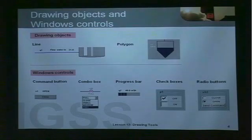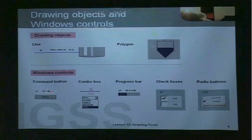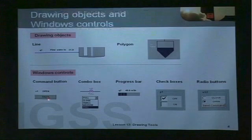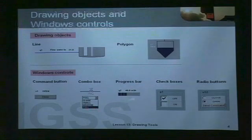You can also include Windows controls to represent IGSS objects. Here we have some examples: command buttons, typically used to link to another diagram or to send a digital command — for example, we close a valve here. We can use a combo box also for digital commands. Progress bar for analog objects. And check boxes and radio buttons for digital objects like pumps and valves, as you see here.